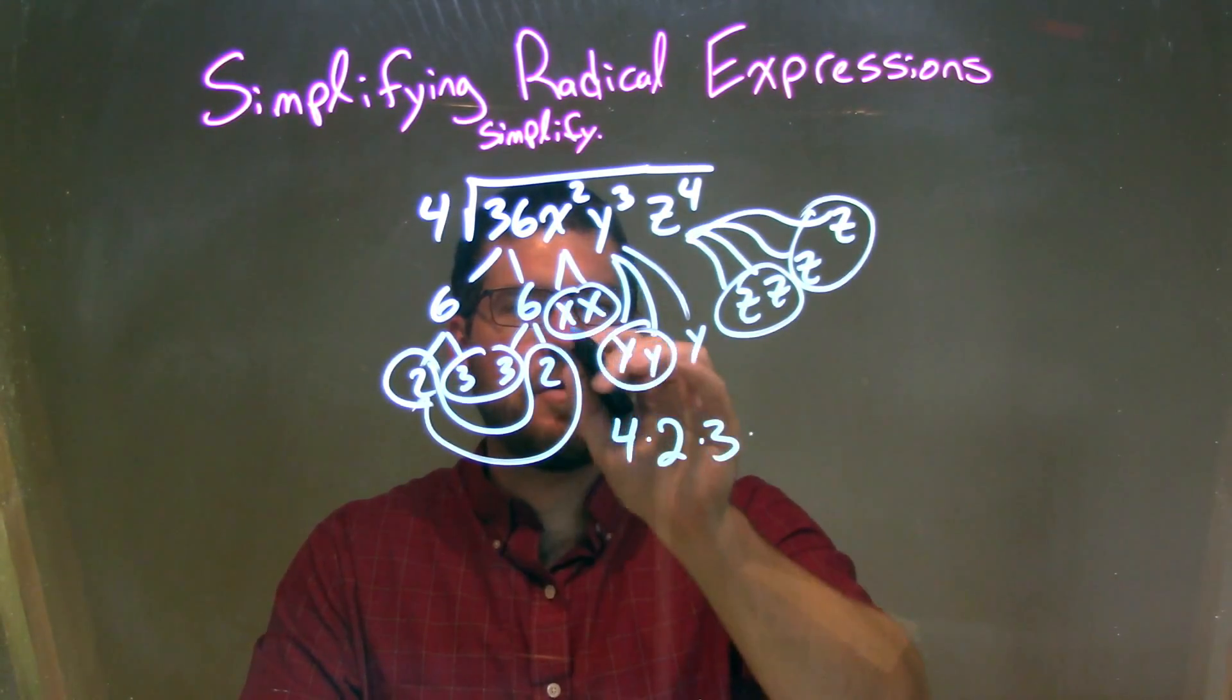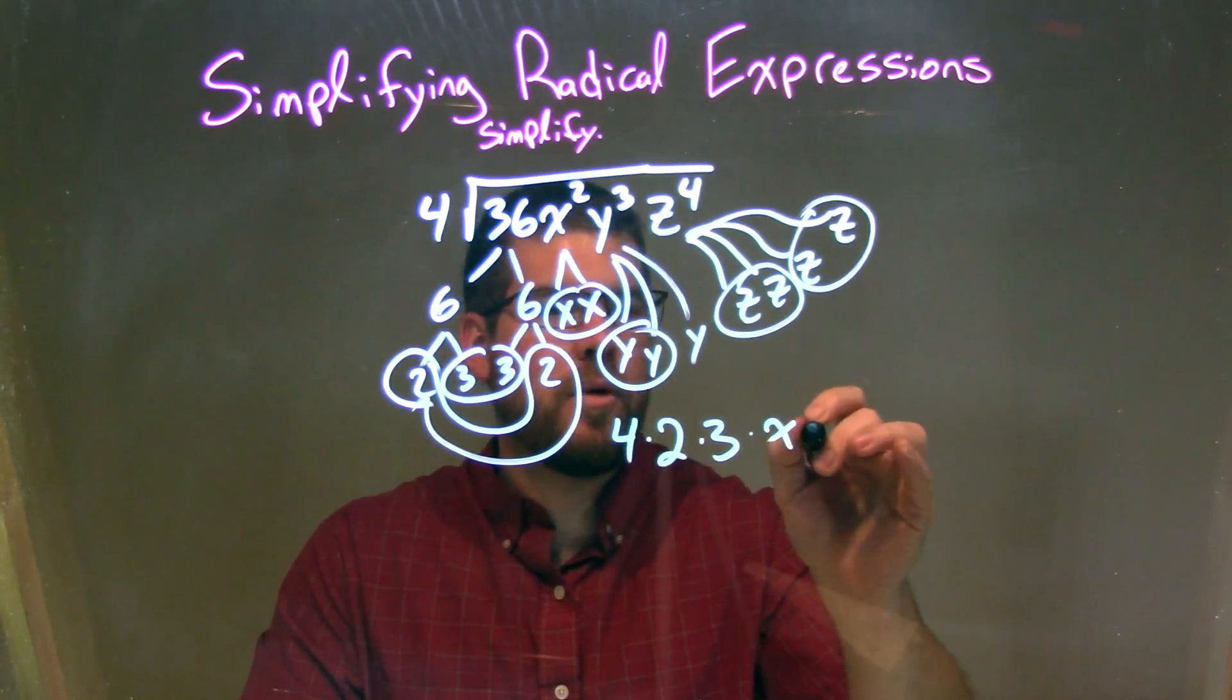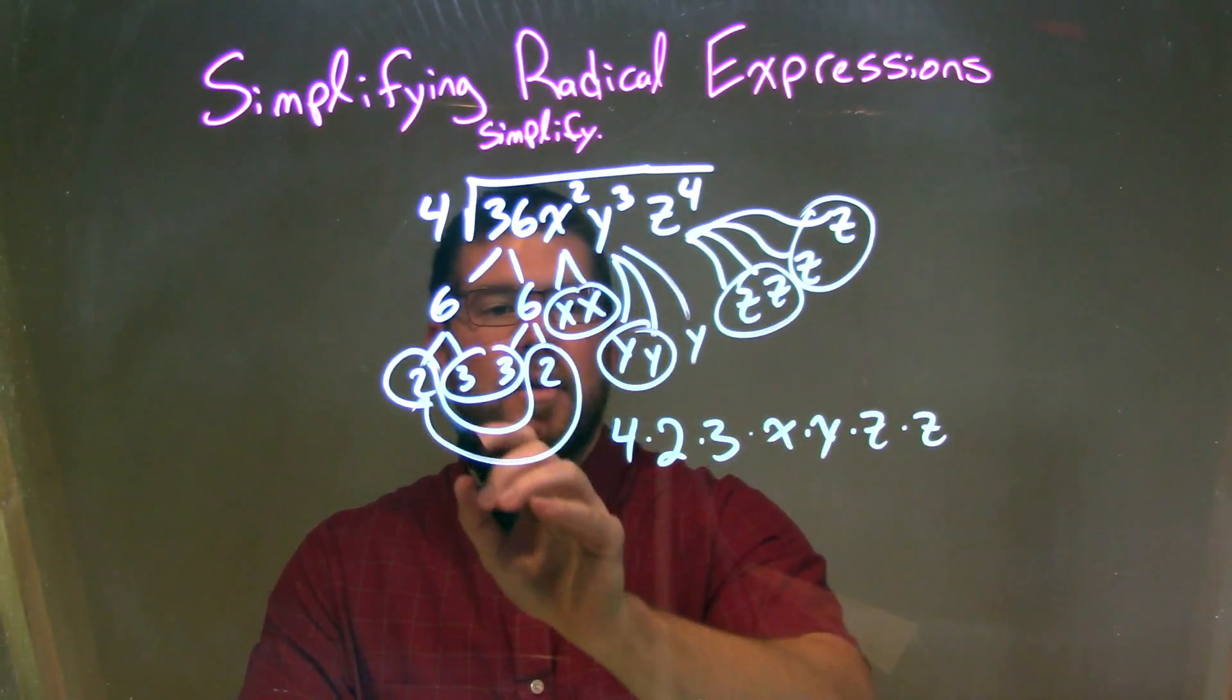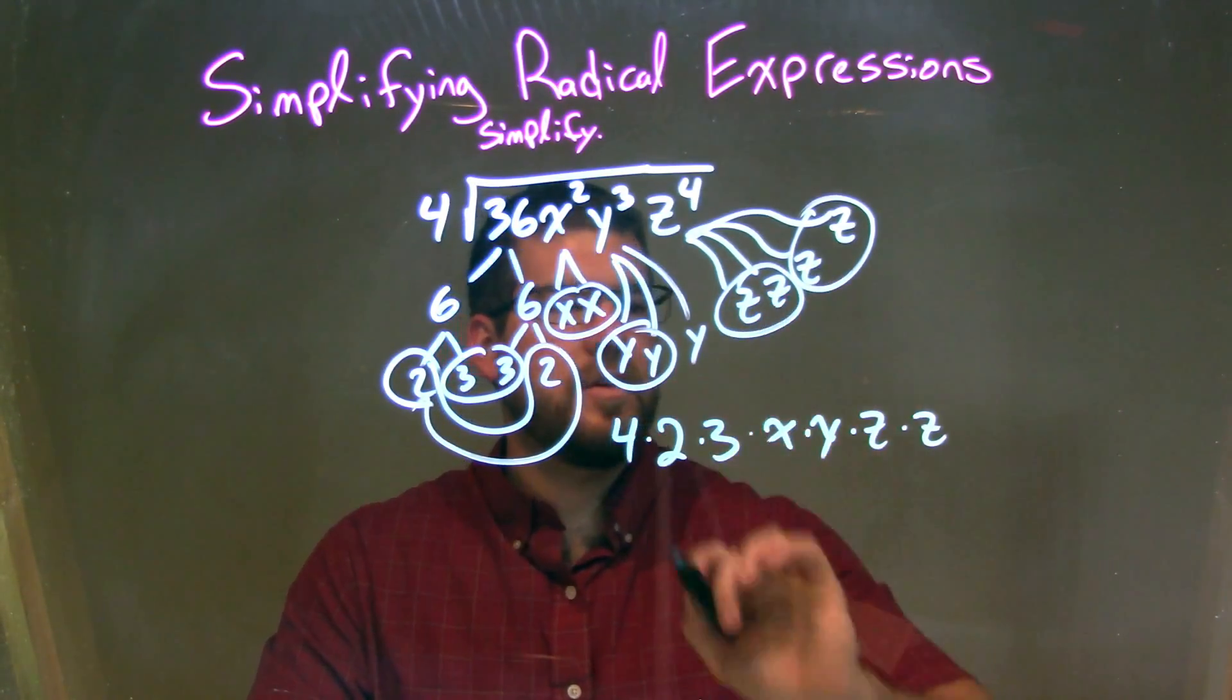All right, make sure we bring everything. We have an x, we have a y, we have a z, and we have a z. Okay, so we've got everything. The 2, the 3, the x, y, z, and the z.